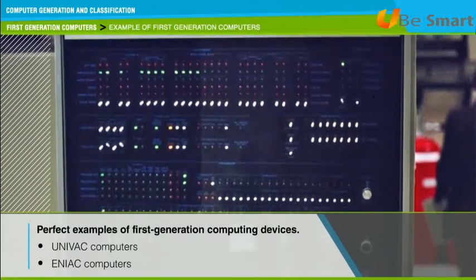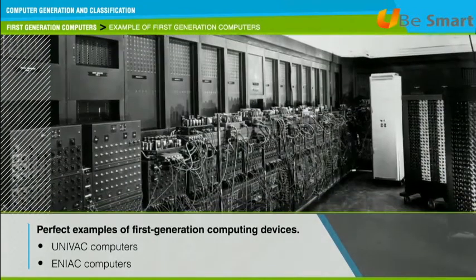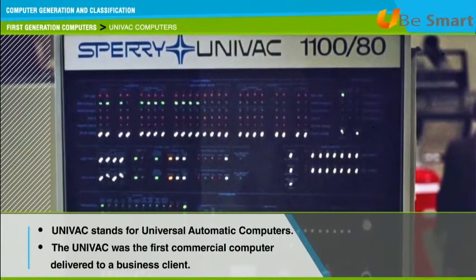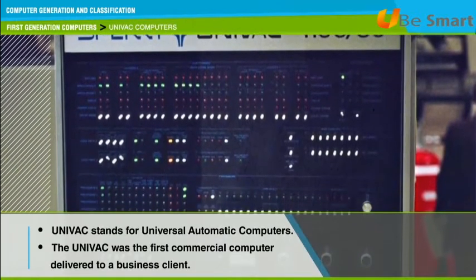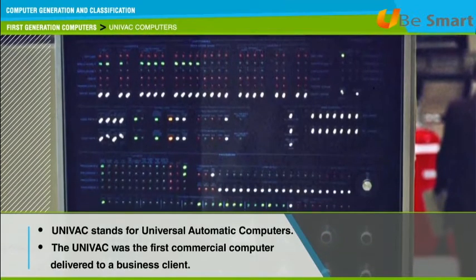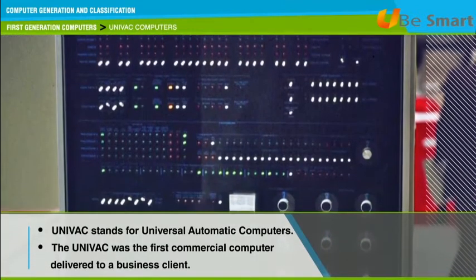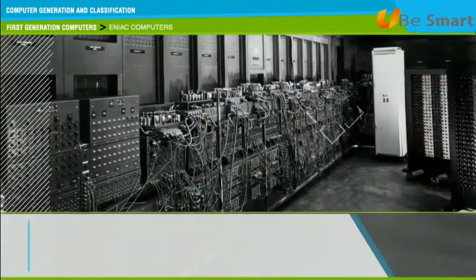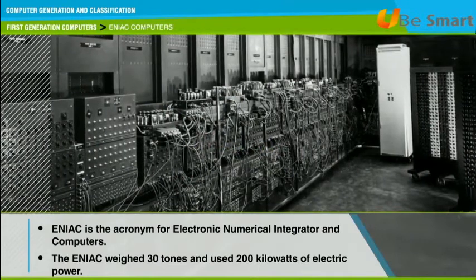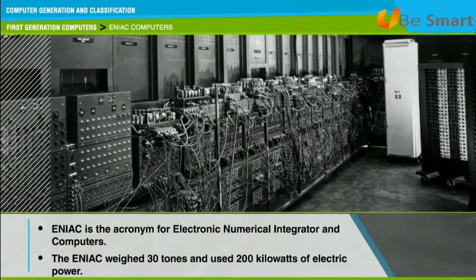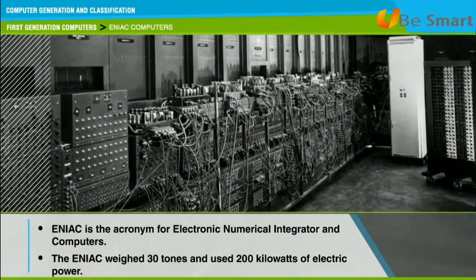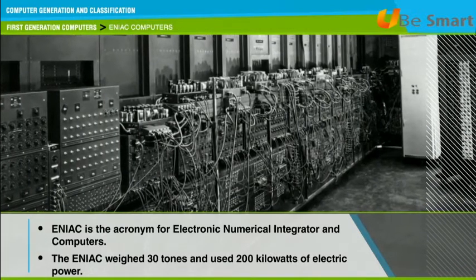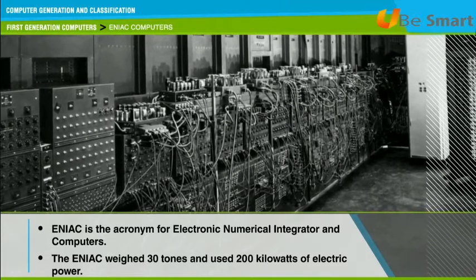Perfect examples of first generation computing devices are UNIVAC and ENIAC. UNIVAC stands for Universal Automatic Computers. The UNIVAC was the first commercial computer delivered to a business client, the US Census Bureau, in 1951. ENIAC is the acronym for Electronic Numerical Integrator and Computer. It is the world's first operational electronic digital computer, developed by Army Ordnance to compute World War II ballistic firing tables.